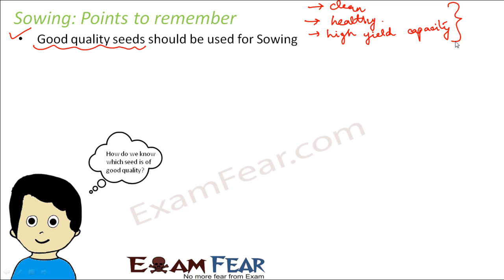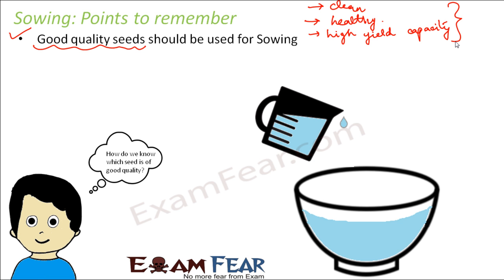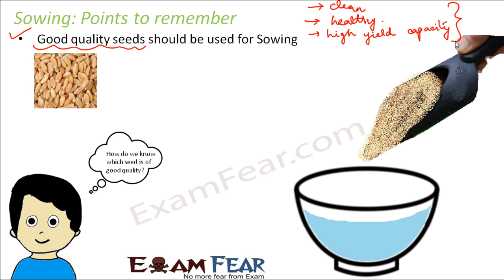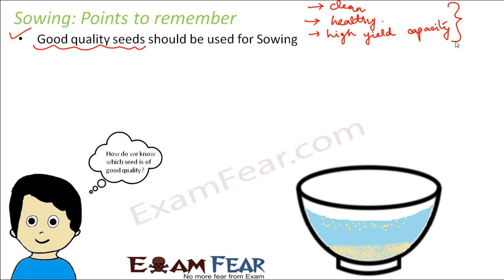To test seed quality, take a bowl and put some water in it — you can try this at home. Take a handful of seeds, such as rice or wheat seeds, and put them into the bowl of water. After a couple of seconds, some seeds will float on the surface while most seeds will settle at the bottom. The seeds that are lighter float, and the seeds that are heavier settle down.